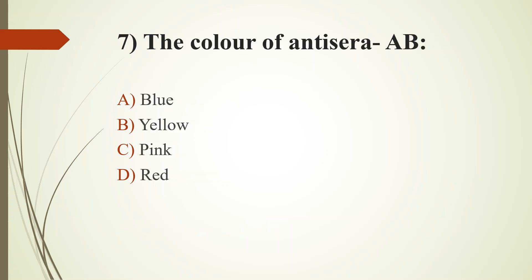Seventh question: The color of Antiserum AB. Option A: blue. Option B: yellow. Option C: pink. Option D: red. Answer is Option C, pink. The color of Antiserum A is blue, the color of Antiserum B is yellow, and the color of HG reagent is green.